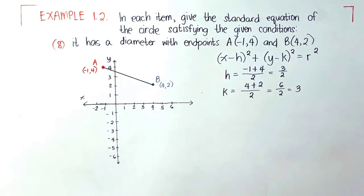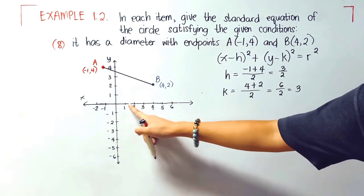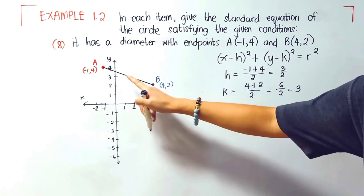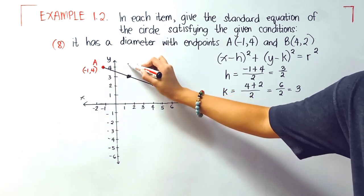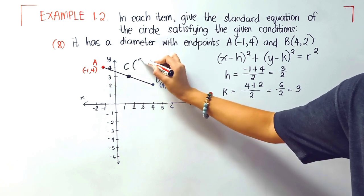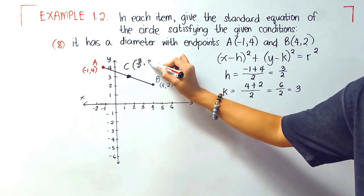Plotting our center, we have here 1.5 and 3. So our center is located here, again that's 3 halves, 3.